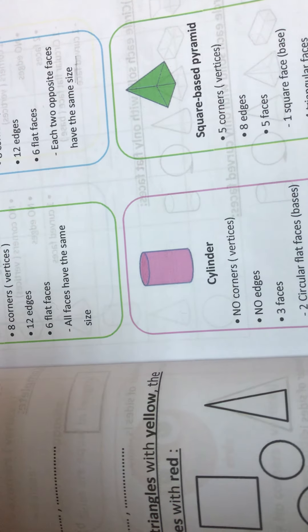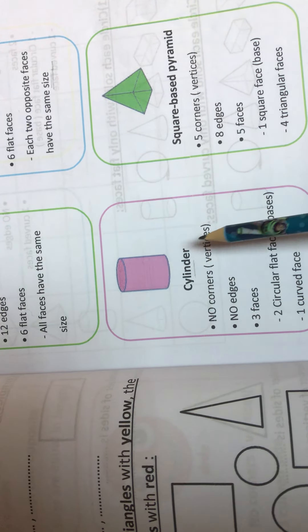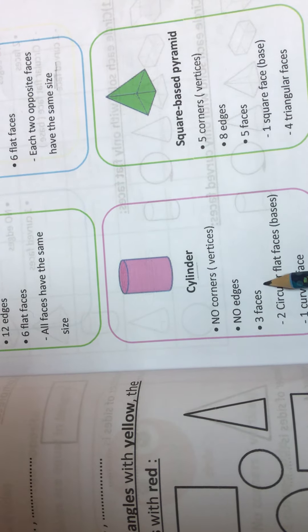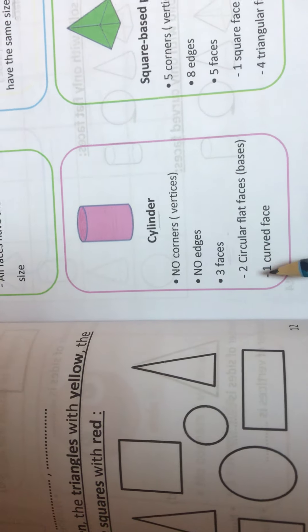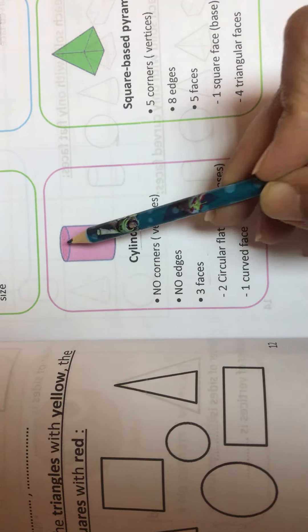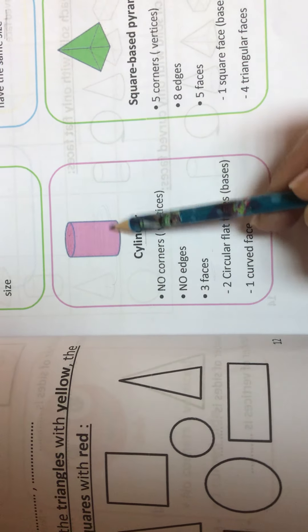The third one: cylinder. No corners or vertices, no edges. Three faces: 2 circular flat faces (base, up and down) and 1 curved face.